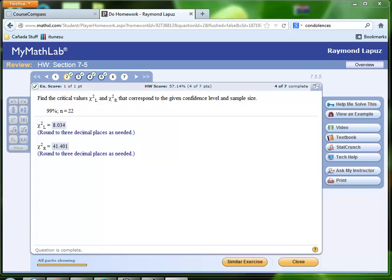This is a problem that we had already done, and this is a problem where it's asking us to find critical chi-square left and right values that correspond to the confidence level of 99% and a sample size of 22.